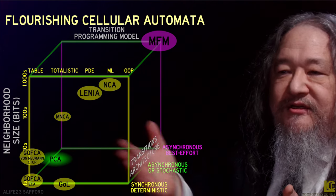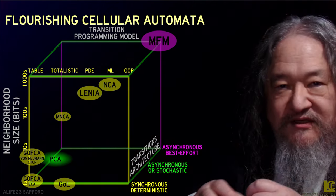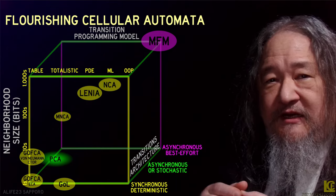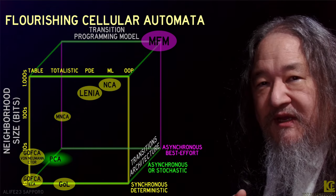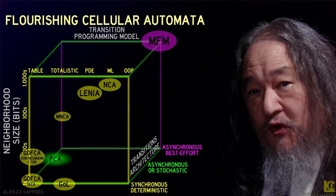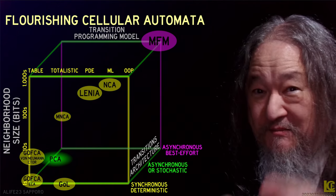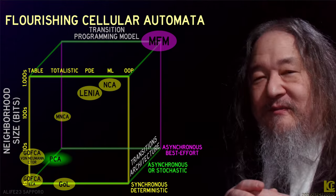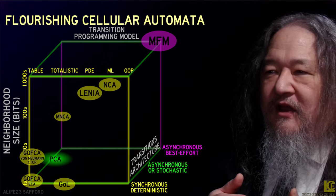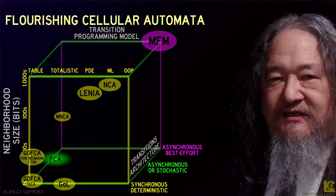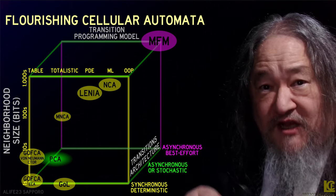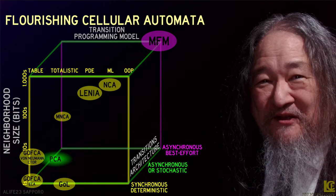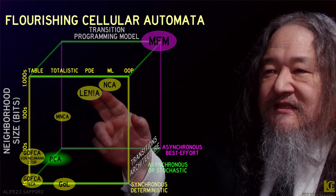The Game of Life uses this totalistic idea — you count up states. Lenia has a PDE model feel; we learned this morning it's not exactly a PDE but it could be one, and certainly looking at it from a distance it has that same feel. The neural CAs that folks at this conference are talking about right now in one of the other rooms — these things are oriented around real numbers or floats.